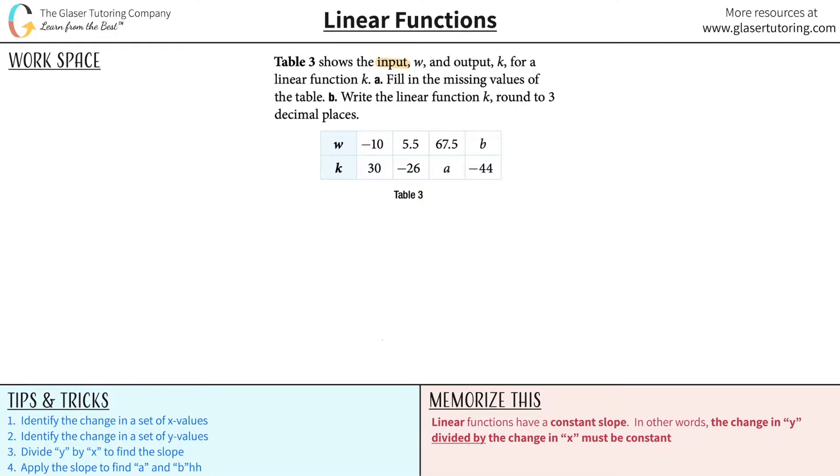Table 3 shows the input w and the output k for a linear function. Letter a, fill in the missing values of the table. Alright, so basically what we need to do here is we're given a table of values, and we're told that it's linear, which is extremely important to help determine how to solve the problem. And we have to figure out these missing values.